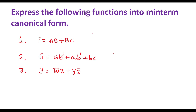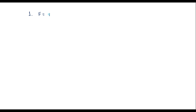Let me take the first one: function f is equal to ab plus bc. We know that canonical form or min-term canonical form is nothing but standard SOP. In standard SOP, it consists of all the variables. By observing this expression, we can say that it is having three variables: a, b, and c.